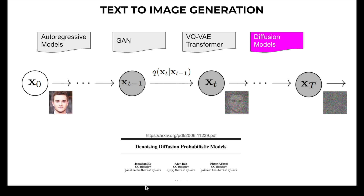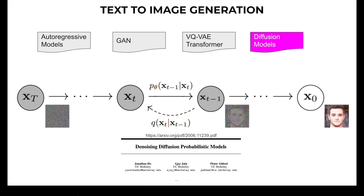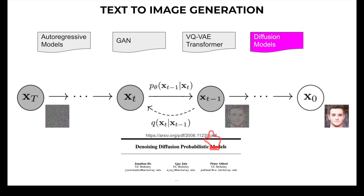A diffusion model is a latent variable model which maps to the latent space using a fixed Markov chain. The chain gradually adds noise to the data to obtain an approximate posterior, and the latent variables have the same dimensionality as the original data, such as X0. The Markov chain is applied to image data — transforming the image into pure Gaussian noise. The goal of training is to learn the reverse process: by traversing backwards along the Markov chain, the model generates new data that differs from but relates to the training data.